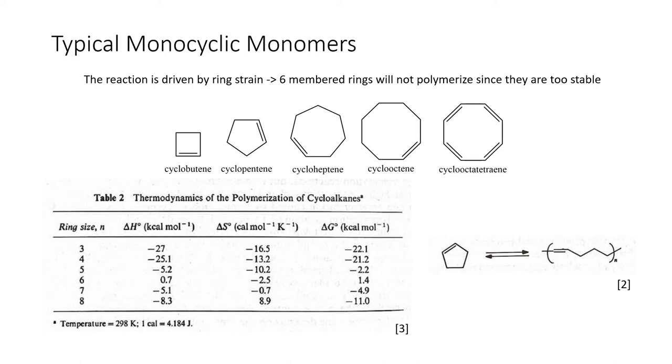For these rings, monocyclic rings, it's important to acknowledge that there are backbiting reactions that can happen. So you will get some equilibrium reactions between the monomer and the polymer chain. You can get them for these five-membered rings as shown below. You see that it is still negative, but it's a harder reaction to pull off than for cyclobutene or cyclooctene.